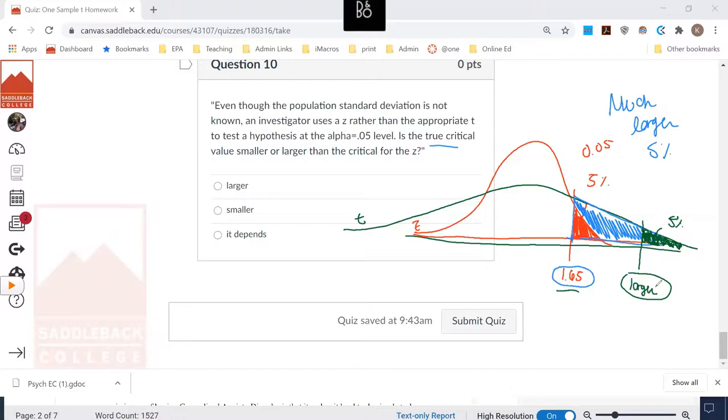So what we saw with both of these questions was an attempt to explain or understand how the t distribution really does change the relationship you have with your critical value and your rejection region if you were to erroneously use the z distribution. And so this is why we need to make sure if we're not given the population standard deviation, we need to use the t distribution. Otherwise, we've inflated our alpha and we're more likely to reject the null when we shouldn't be.